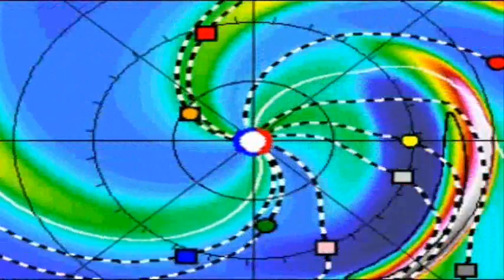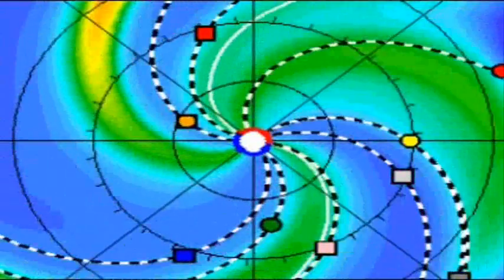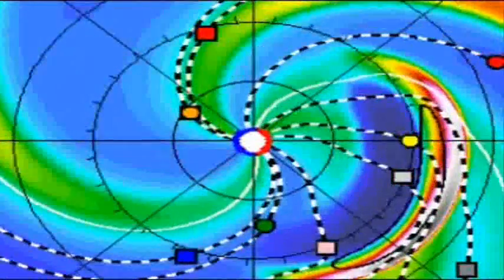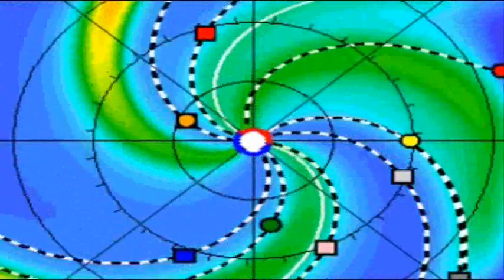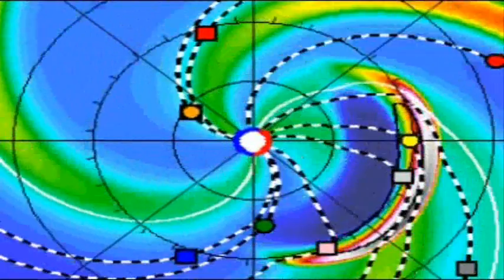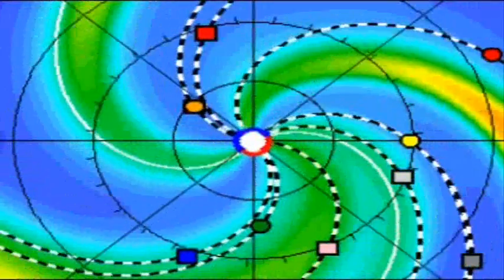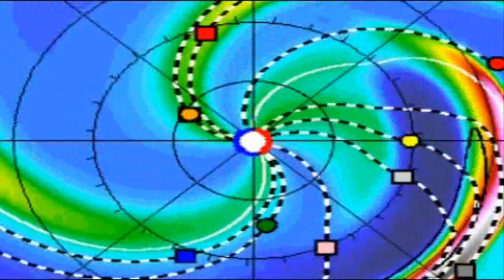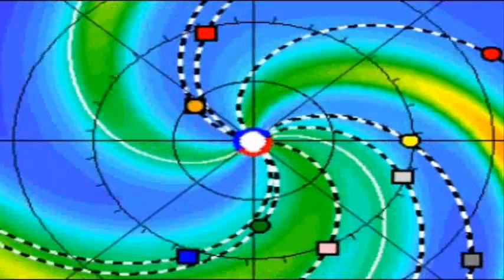The Solar and Heliospheric Observatory recorded the cloud expanding almost directly toward Earth. So we have an incoming solar storm from an M3 solar flare that I believe is expected to arrive sometime tomorrow. Let me read down here.